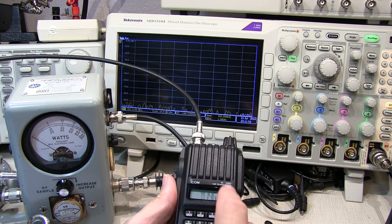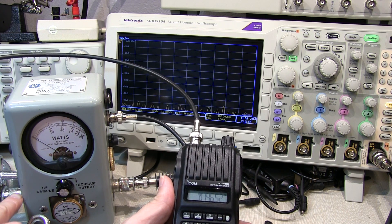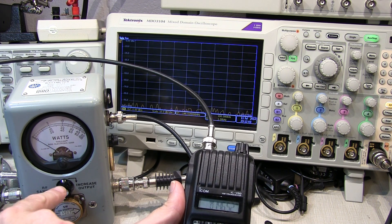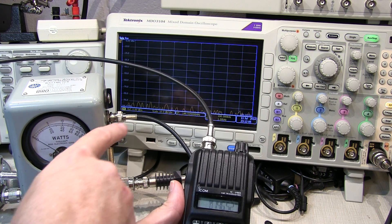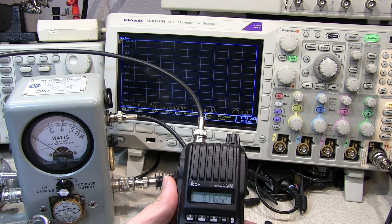The setup here has the transceiver's output going into the Bird watt meter and then being terminated into a 50-ohm dummy load. This watt meter has an RF sampler in it. The sampler output is being sent to the spectrum analyzer input.